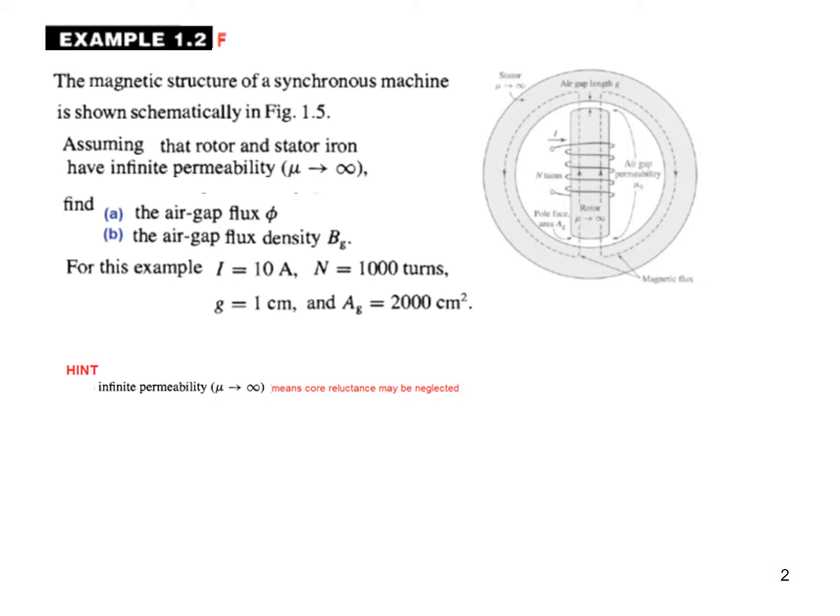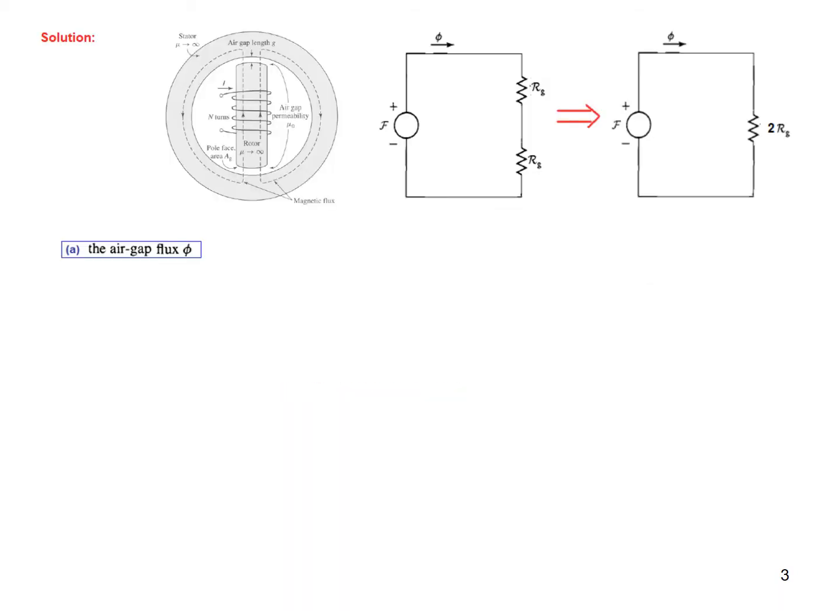Now the hint is that since the permeability is infinity, therefore the core reluctance may be neglected. Now we can draw the equivalent electrical circuit for this magnetic circuit. Two air gaps, and then neglecting the core reluctance because of infinity permeability, and these two can be added.